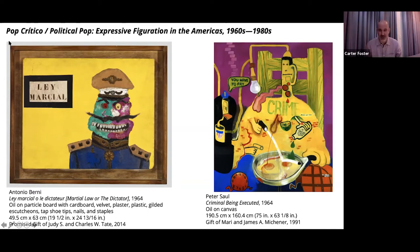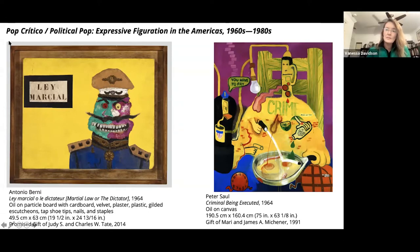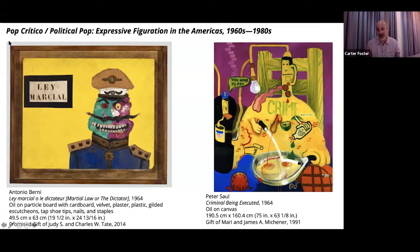Peter Saul, who taught at UT, is paired with Antonio Berni. We were struck by how the works were done totally independently — the artists didn't know each other — done the same year but not in the same place. The Peter Saul was done in Rome, the Berni in Buenos Aires. Both deal with politics: Peter Saul with capital punishment, Berni with dictatorships. The bright colors — yellow, blue, and red — and the exaggerated cartoonish aesthetic in both works was very striking.